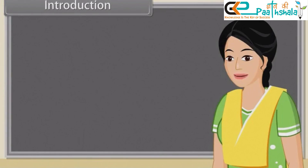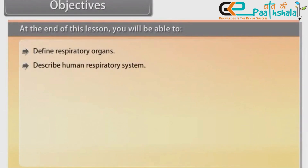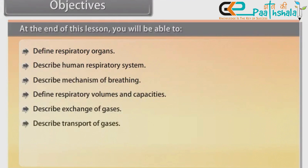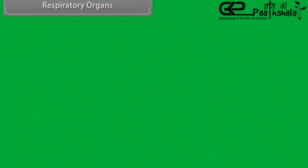In this lesson, you will learn Breathing and Exchange of Gases objectives. At the end of this lesson, you will be able to: define respiratory organs, describe human respiratory system, describe mechanism of breathing, define respiratory volumes and capacities, describe exchange of gases, describe transport of gases, know about regulation of respiration, and list disorders of respiratory system.